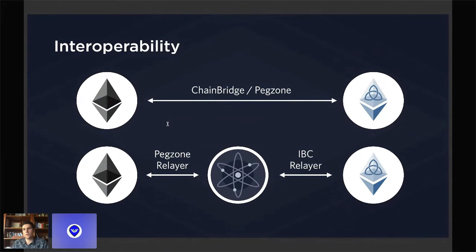If you implement ChainBridge, you'll have to import the modules and relay process that are supported natively within Ethermint — like an oracle-like module and all the necessary processes. Or if Ethermint doesn't support this natively, Ethermint could connect directly through the Cosmos Hub or the Peggy chain, which connects directly to Ethereum through the peg and relay.